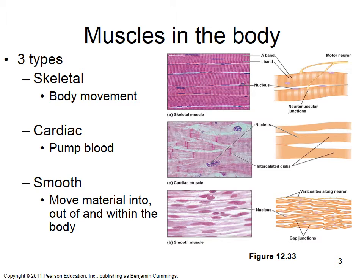Skeletal muscle moves our body. Here's an actual micrograph of skeletal muscle — it's striated, highly arranged, and can develop really strong contractions. Cardiac muscle is found only in the heart and pumps our blood. It's also striated and looks similar to skeletal muscle, but its arrangement isn't as highly organized, so contractions aren't quite as strong.